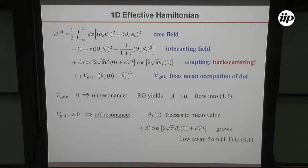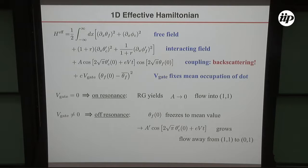With that, we get the following effective Hamiltonian. There's a free field associated with the phase at the boundary that wasn't coupled to the environment. There's my interacting field — the phase that is coupled to the environment. And this is the backscattering term — a cosine of the phase which corresponds to backscattering, here with coupled backscattering of both particles. In addition, the gate voltage, if I'm detuning from exactly on resonance, is going to fix the mean occupation of the dot, giving rise to that term. Theta F is basically the number of electrons in the dot. The bias voltage appears in this backscattering as an electron acquires additional energy eV from the difference in chemical potentials between right-going and left-going, so the eVt goes right in there.